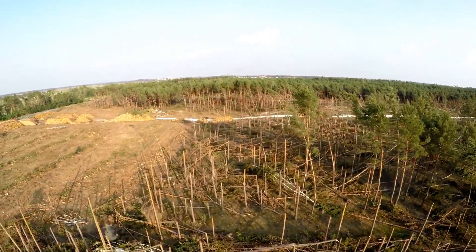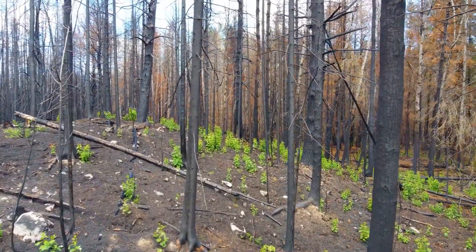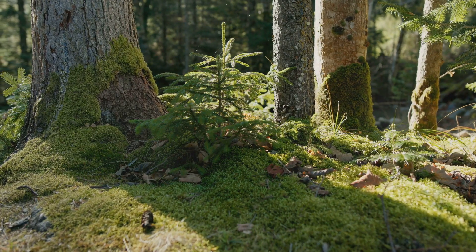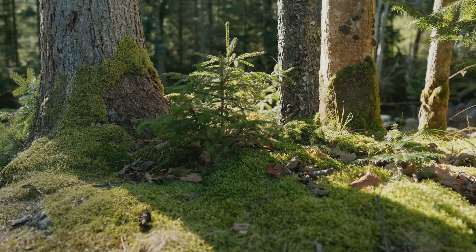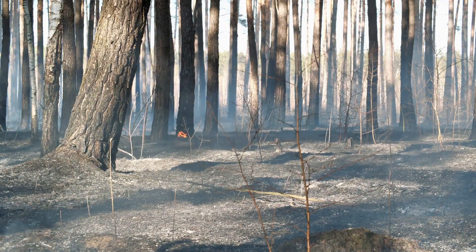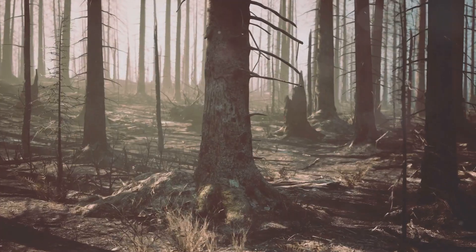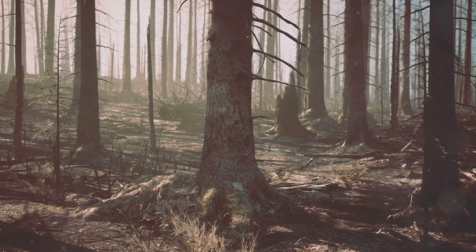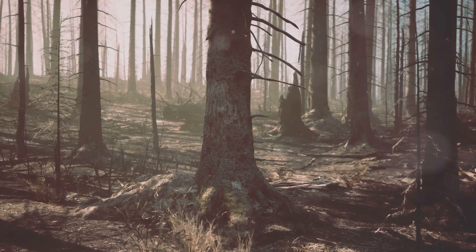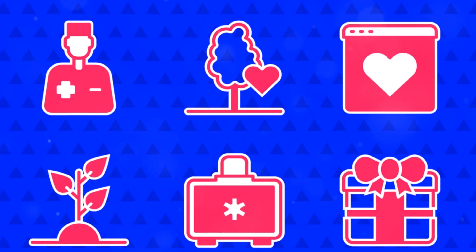Secondary succession occurs where a disturbance has removed vegetation but left the soil intact. Disturbances reset the successional clock. A classic example is forest regrowth after a wildfire. Fire creates opportunities for new growth, and we can assist in ecosystem restoration through remediation.